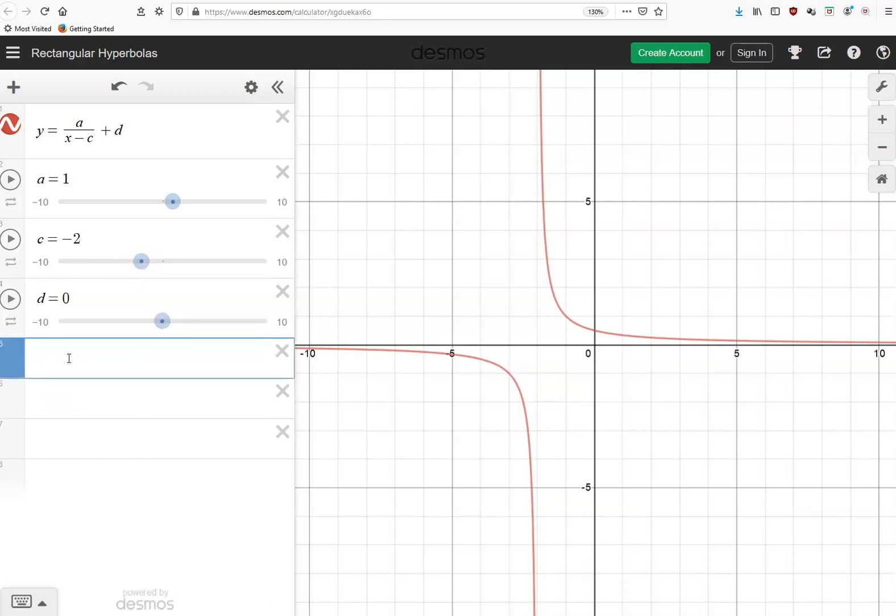So the effect, again, of c, if c is positive, it moves the graph to the right. If c is negative, it moves the graph to the left. Let's put that back to 0.